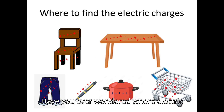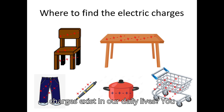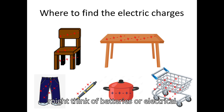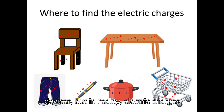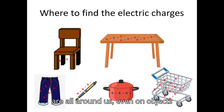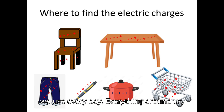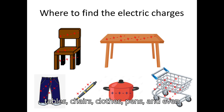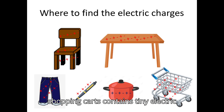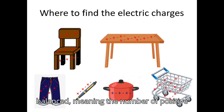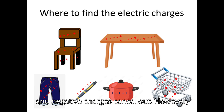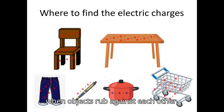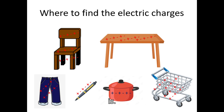Have you ever wondered where electric charges exist in our daily lives? You might think of batteries or electrical devices, but in reality electric charges are all around us, even on objects we use every day — tables, chairs, clothes, pens, and even shopping carts contain tiny electric charges. These charges are mostly balanced, meaning the number of positive and negative charges cancel out. However, when objects rub against each other, charges can transfer, creating an imbalance. This is how static electricity forms.